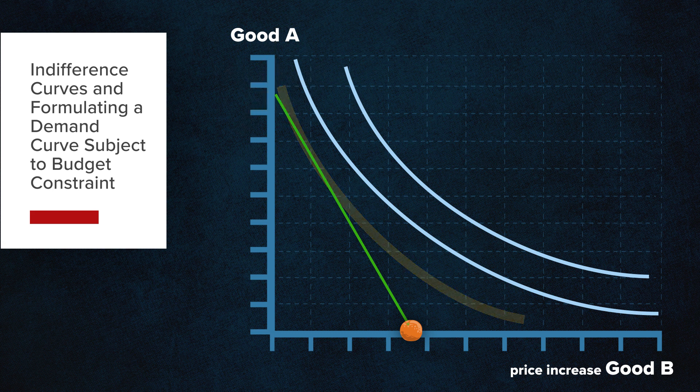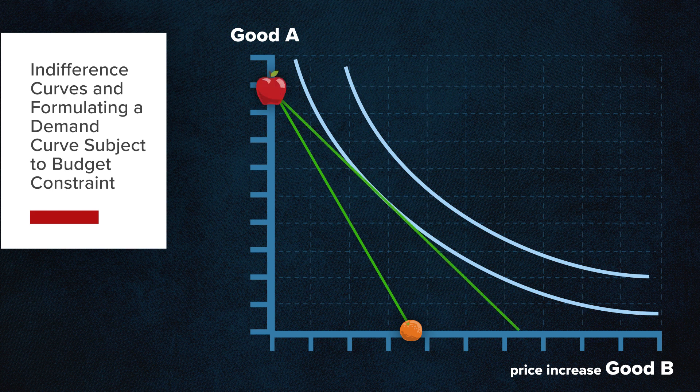A new indifference curve is therefore mapped out, pairing many combinations of the two at which he is indifferent. However, the initial budget constraint line is no longer attainable due to the price increase of good B.